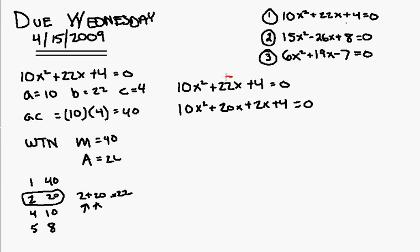Basically, what I did is I took this 22x right here and I broke it up into two terms. The two terms were identified by picking the numbers that when multiplied together gave me 40 and when added together gave me 22.